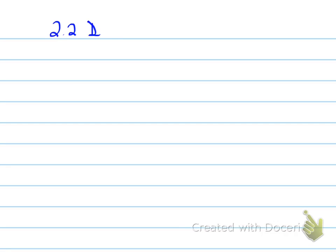Welcome to section 2.2, derivative rules. In 2.1 we talked about finding the derivative, which we did in Chapter 1. Now we're going to look at finding a derivative faster using specific derivative rules. Today we're going to look at three specific rules.